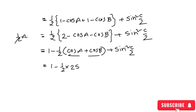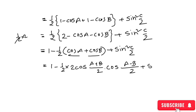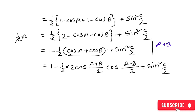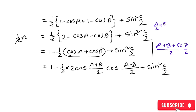We use: 2 cos((A+B)/2) cos((A-B)/2) for cos A plus cos B. Then, since A + B + C = π, we have (A+B)/2 = π/2 minus C/2. So cos((A+B)/2) becomes cos(π/2 minus C/2), which equals sin(C/2). Therefore the expression simplifies further.